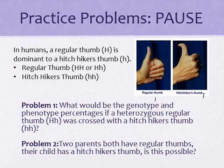So what I'd like you to do here is go ahead and pause the video. I would like you to answer the next two questions on your own. Problem one: what would be the genotype and phenotype percents if a heterozygous regular thumb was crossed with a hitchhiker's thumb? The next question is: two parents both have regular thumbs, but their child has a hitchhiker's thumb — how is this possible? Pause the video here, and I'll see you on the next slide with how to answer the problems.